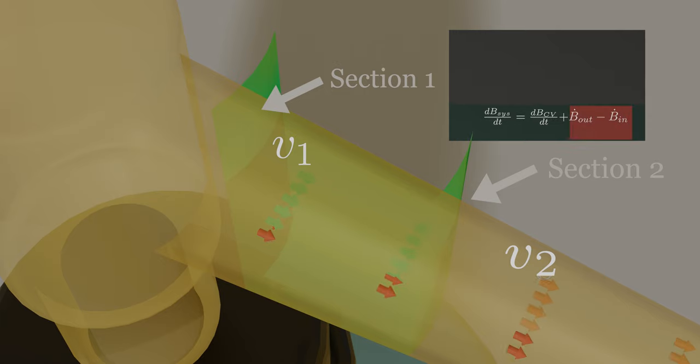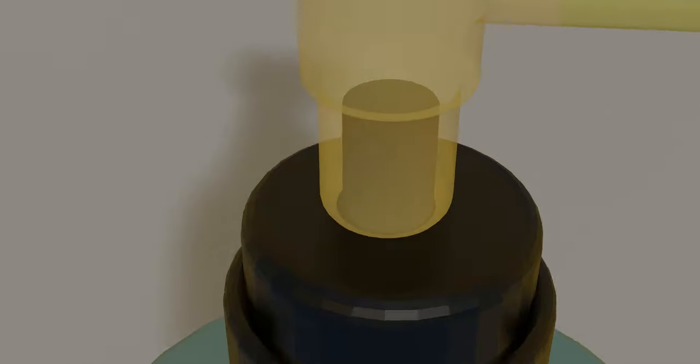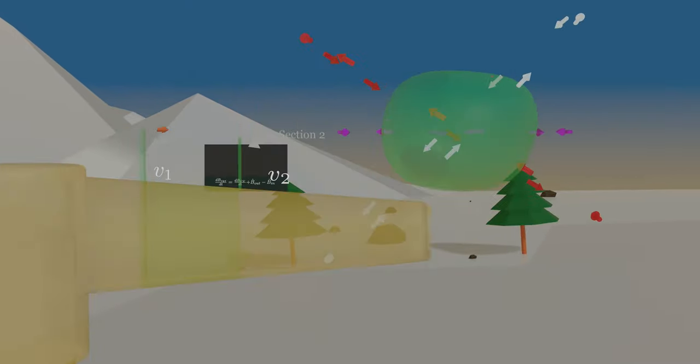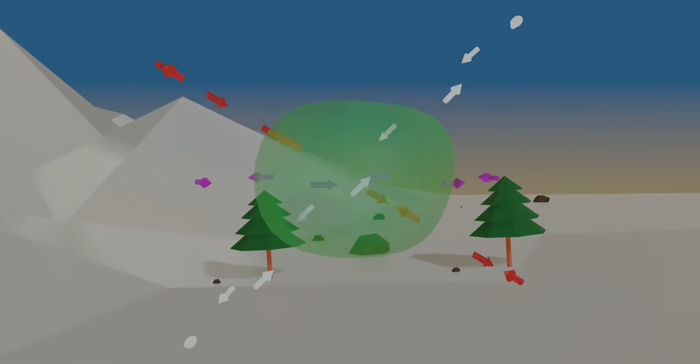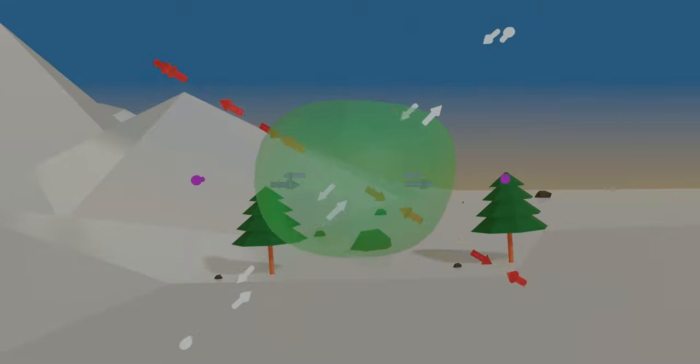The influx and outflux of the property B in this case are easy to determine since there is only one inlet and one outlet, and the velocities are approximately normal to the surfaces at sections I and II. In general, however, we may have several inlet and outlet ports, and the velocity may not be normal to the control surface at the point of entry.